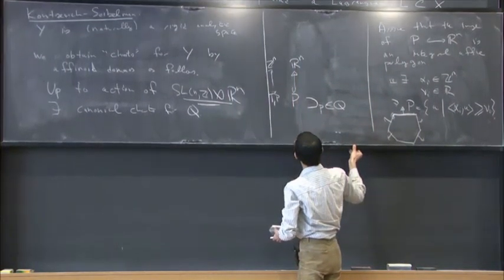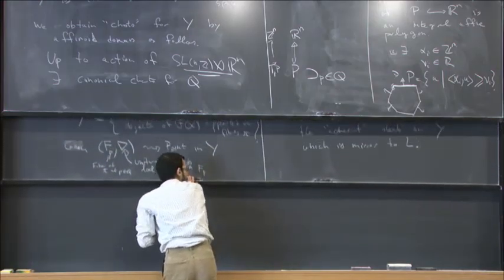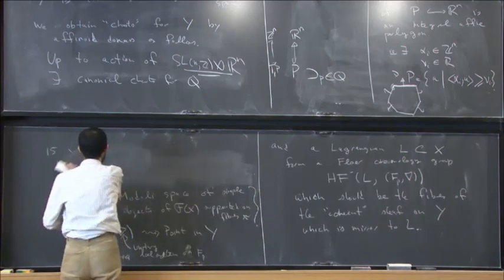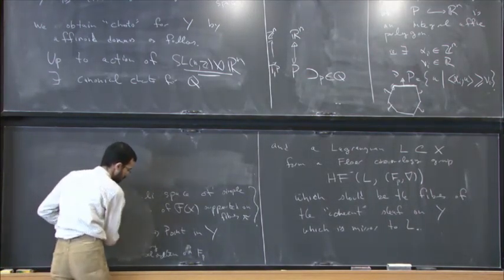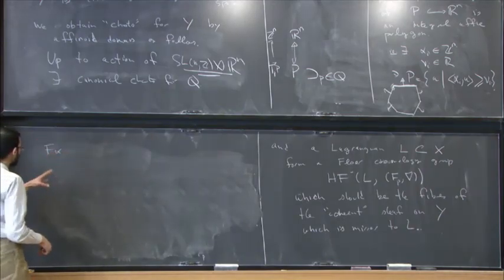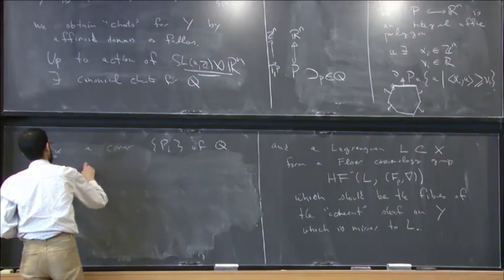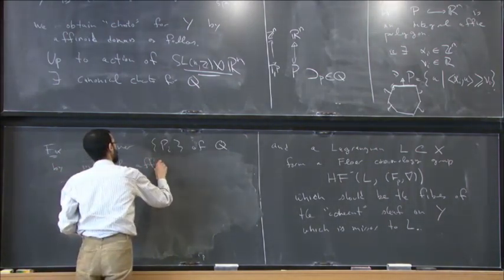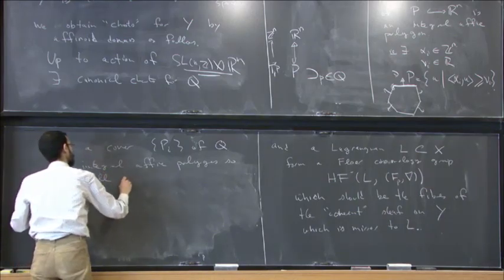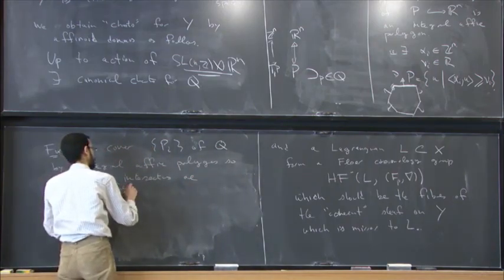So I said I would produce charts for Y. I do this starting by covering Q. We can cover Q by integral affine polytopes whose intersections are again integral affine polytopes. So fix a cover {P_i} of Q by integral affine polytopes, such that all iterated intersections are again integral affine polytopes.